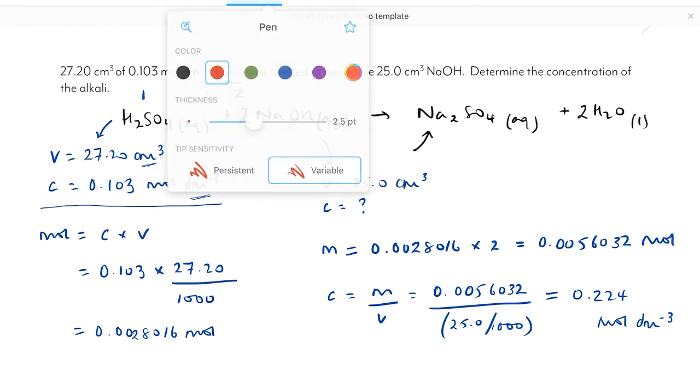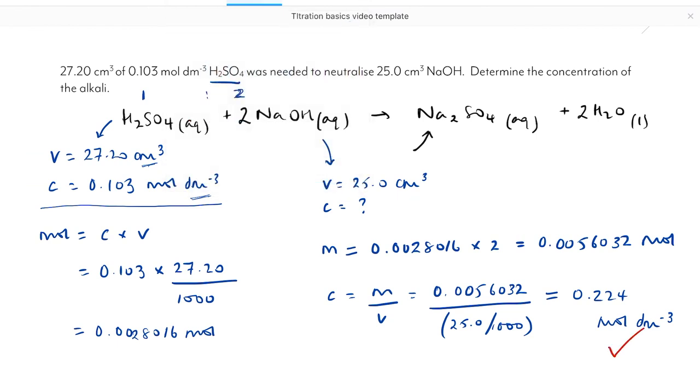Just to point out here that I have quoted my final answer to three significant figures. Because 4 sig fig, 3 sig fig, 3 sig fig. You cannot quote your answer to more significant figures than the least precise piece of information that was put into your original calculation. In this case, 3.